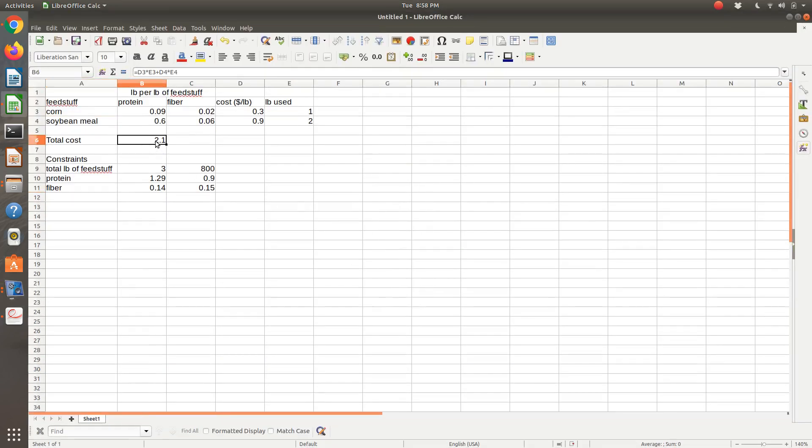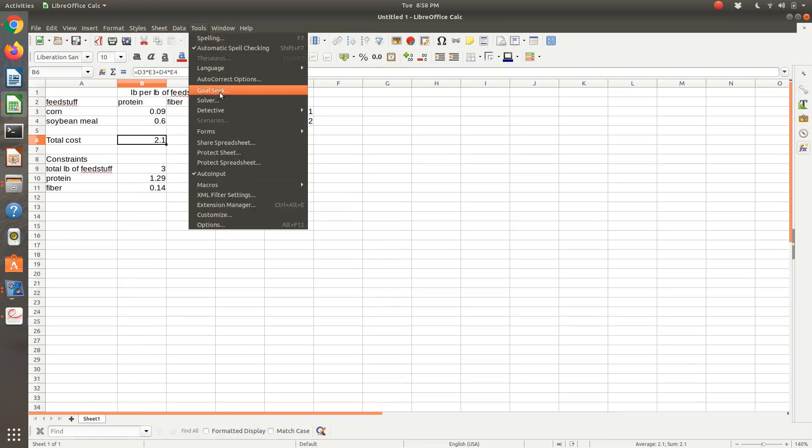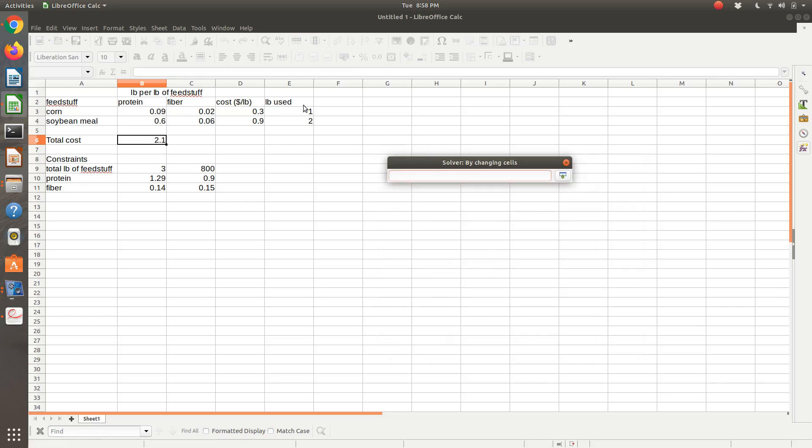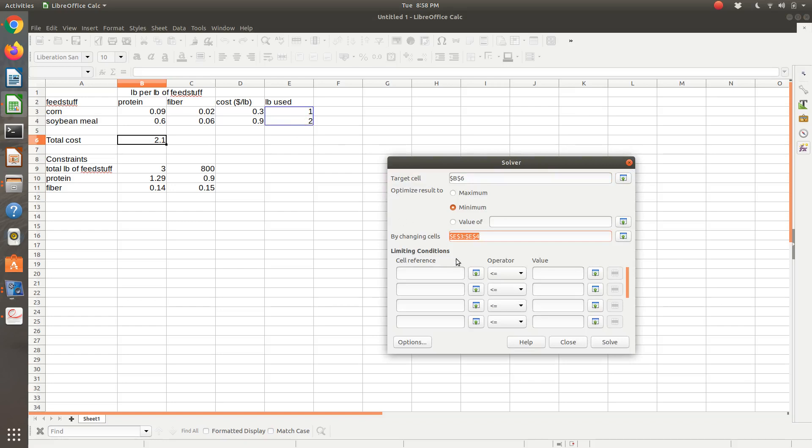So if I go over to solver then, I'm going to click on my objective function, my total cost, tools, solver. So I want to minimize my total cost, which is cell B6 by changing, here's my two variables, the pound of each feed type used.